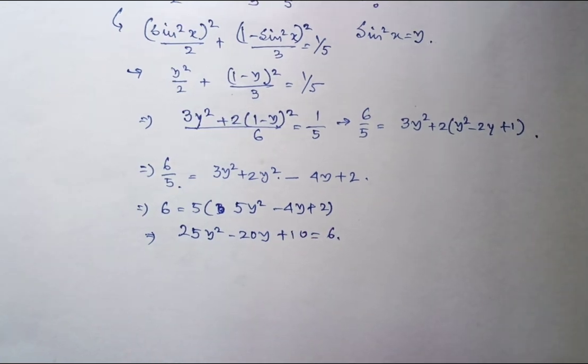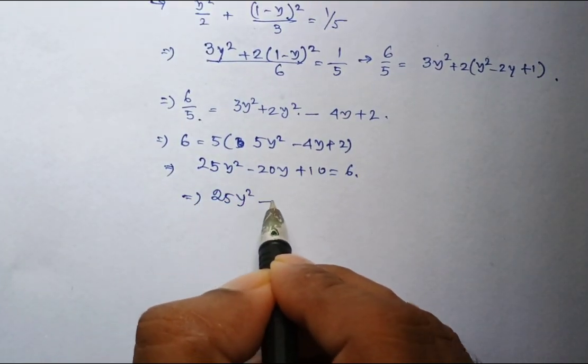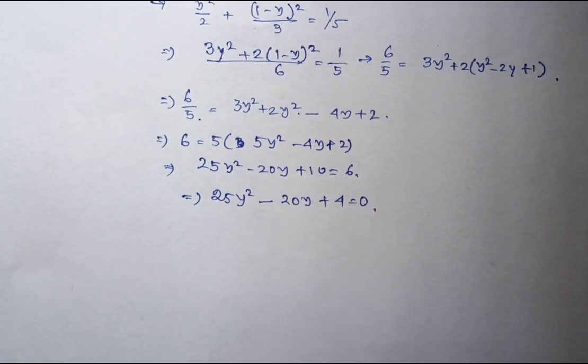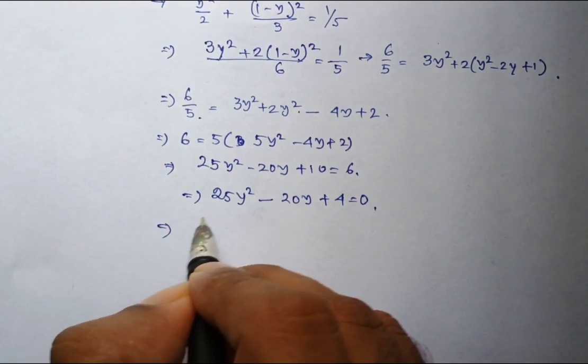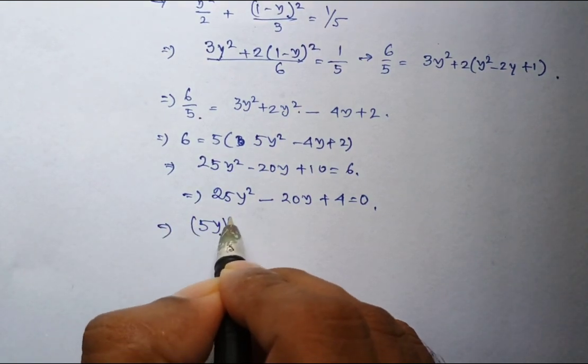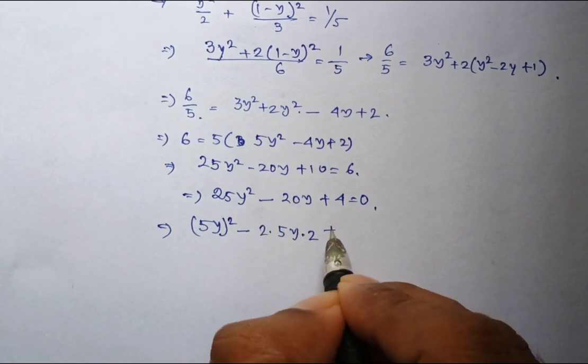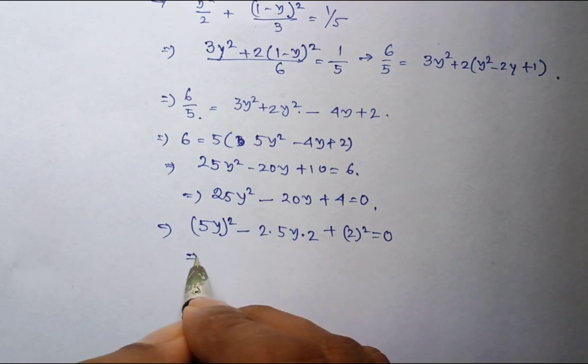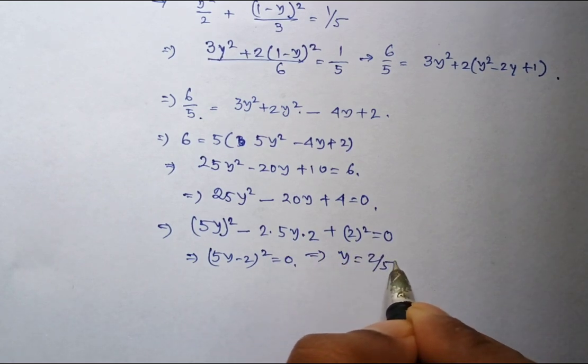Taking 6 to the left side, this expression can be further written as 5y whole square minus 20y. I can write it as 5y into 2 plus 2 whole square equal to 0. That means 5y minus 2 whole square equal to 2 by 5.